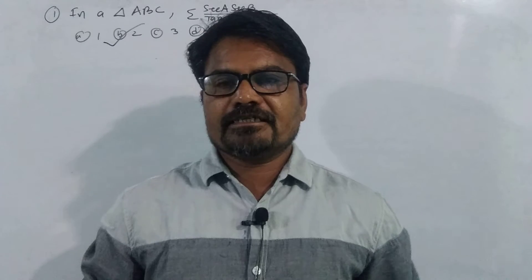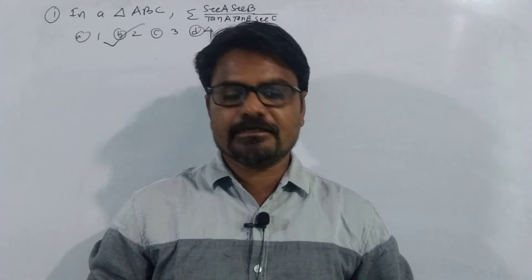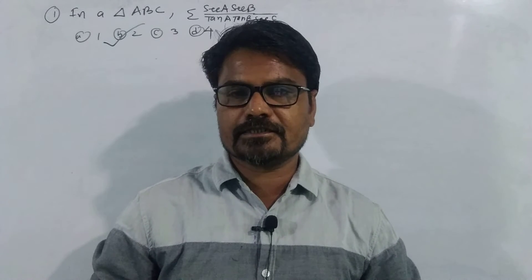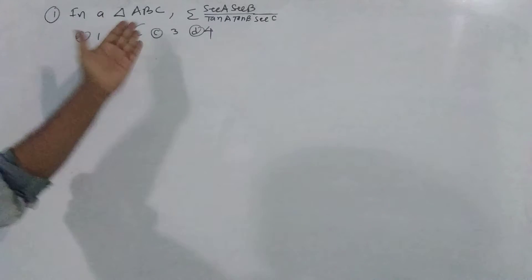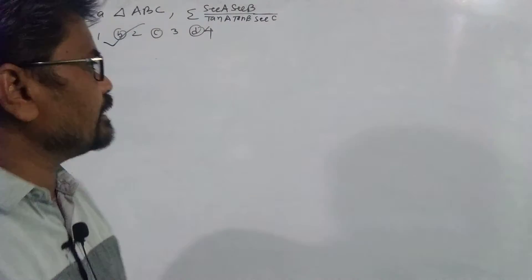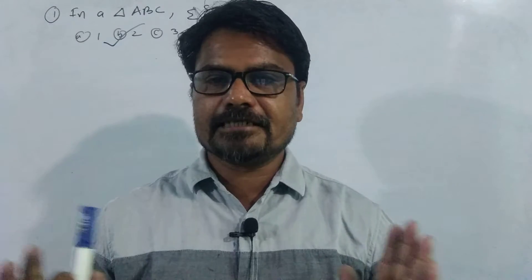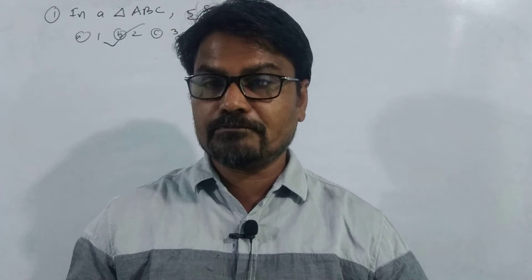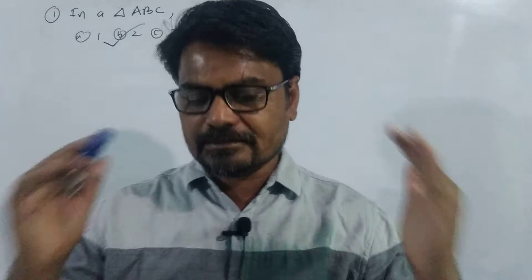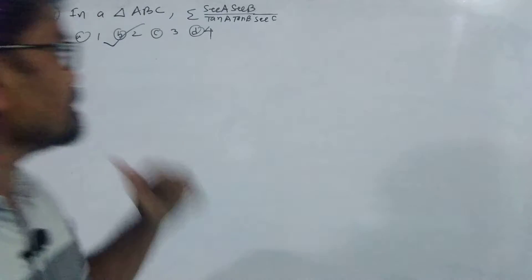Hello dear students, this is your mentor Rajesh Nagribe and we are preparing for DAY 2021 Advance. In this advance series we are discussing trigonometry. The problem in this particular video is: in a triangle ABC, evaluate the summation of cot A · cot B divided by tan A · tan B · cot C. We are dealing in triangle ABC, meaning A, B, and C are the angles of the triangle, and A plus B plus C equals pi. This is the key fact we have to use.